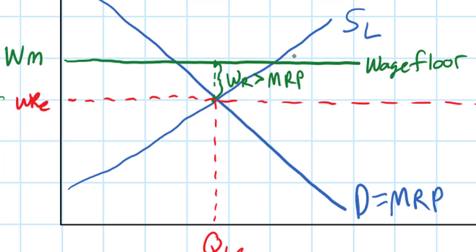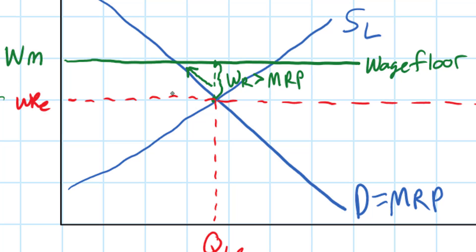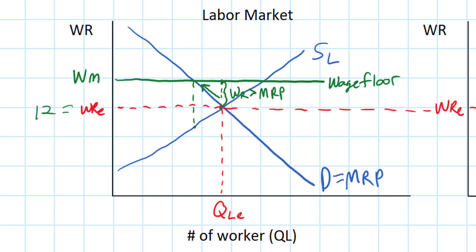It costs firms more to hire QLE workers than those workers actually earn the firm. Therefore, the quantity of workers demanded by employers will decrease to some lower level of employment — QD, the quantity demanded following the imposition of the minimum wage. The law of demand says that as the wage rate rises, the number of workers firms wish to employ decreases because it becomes less profitable to employ workers at the new higher wage rate.